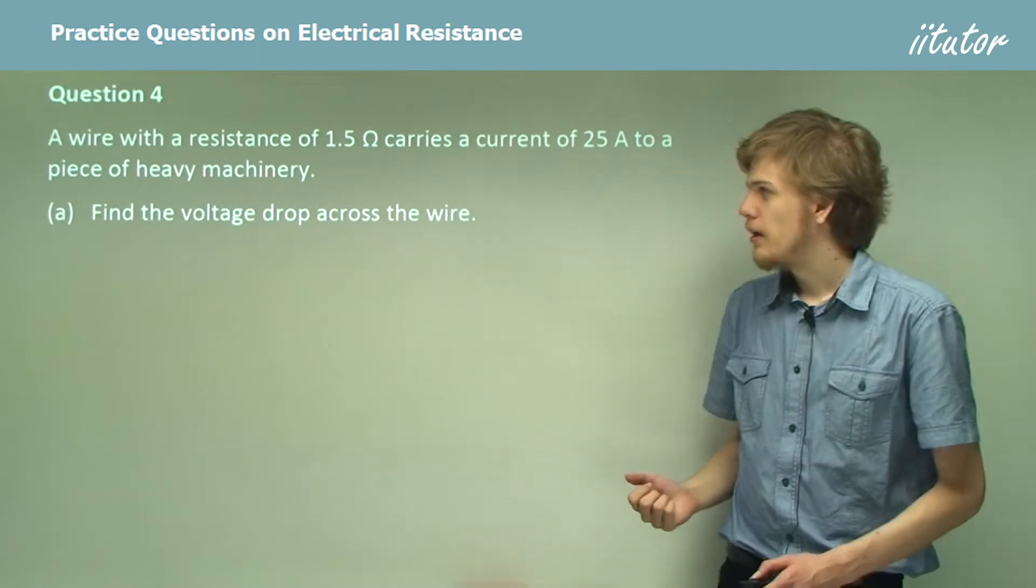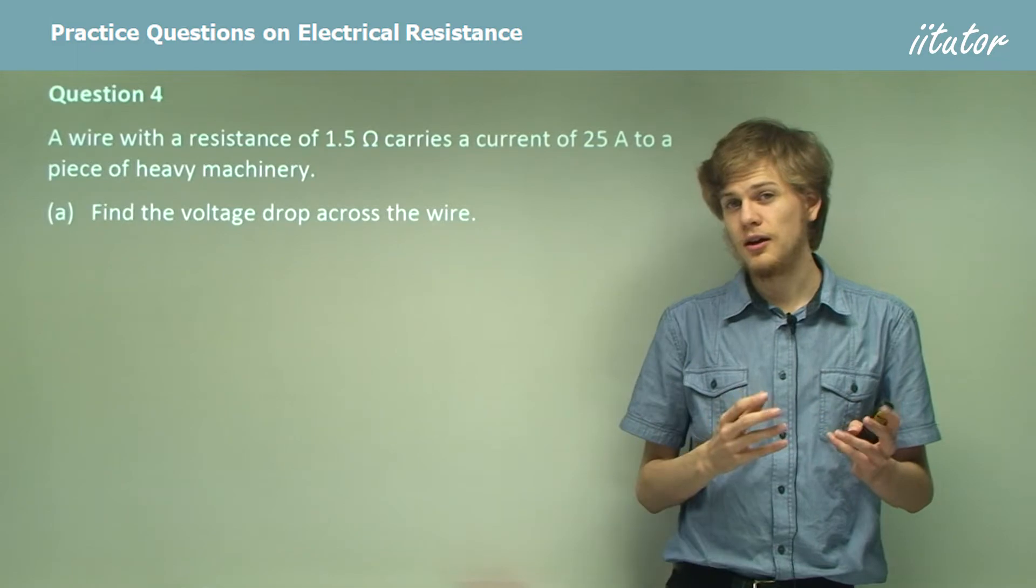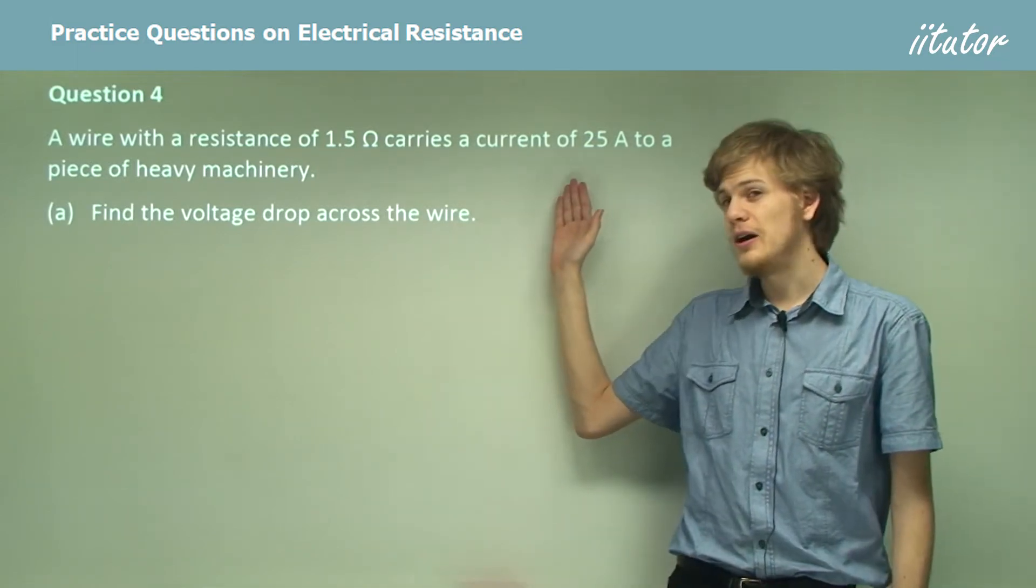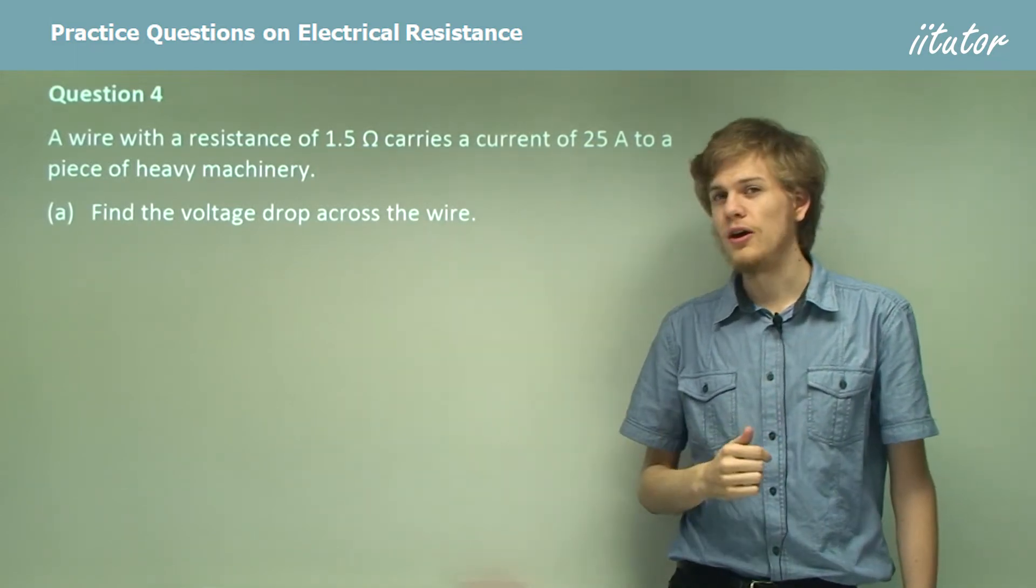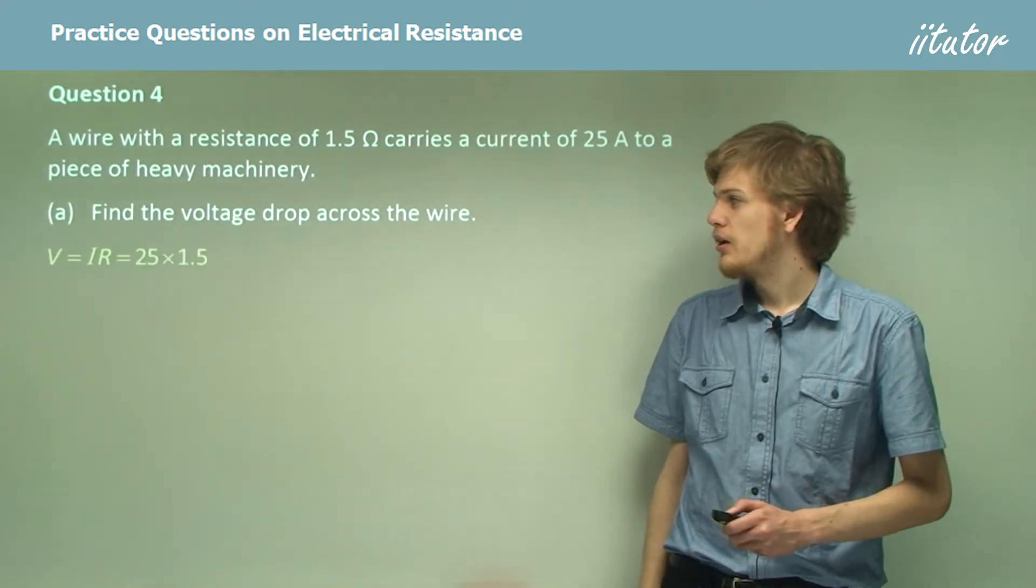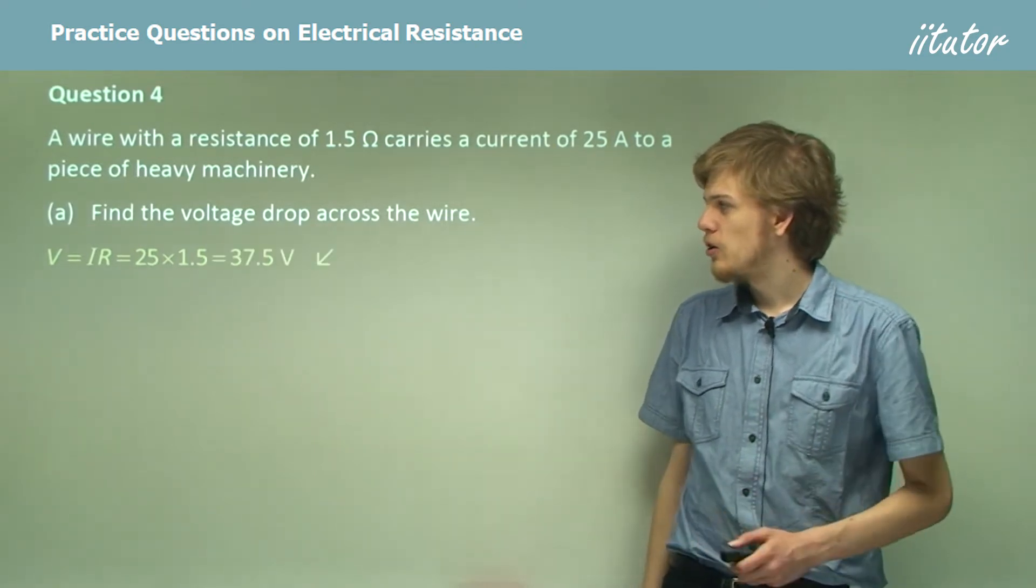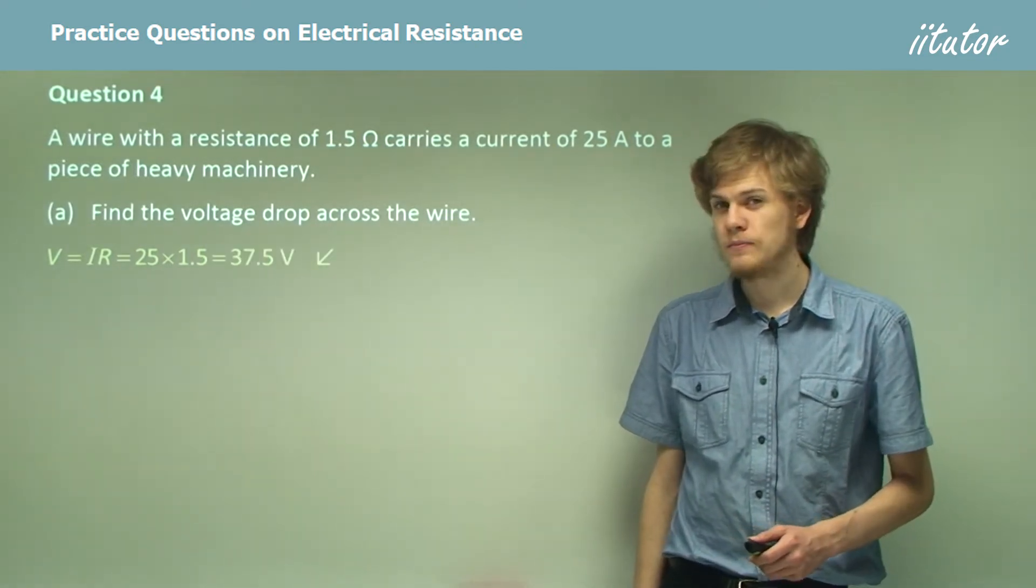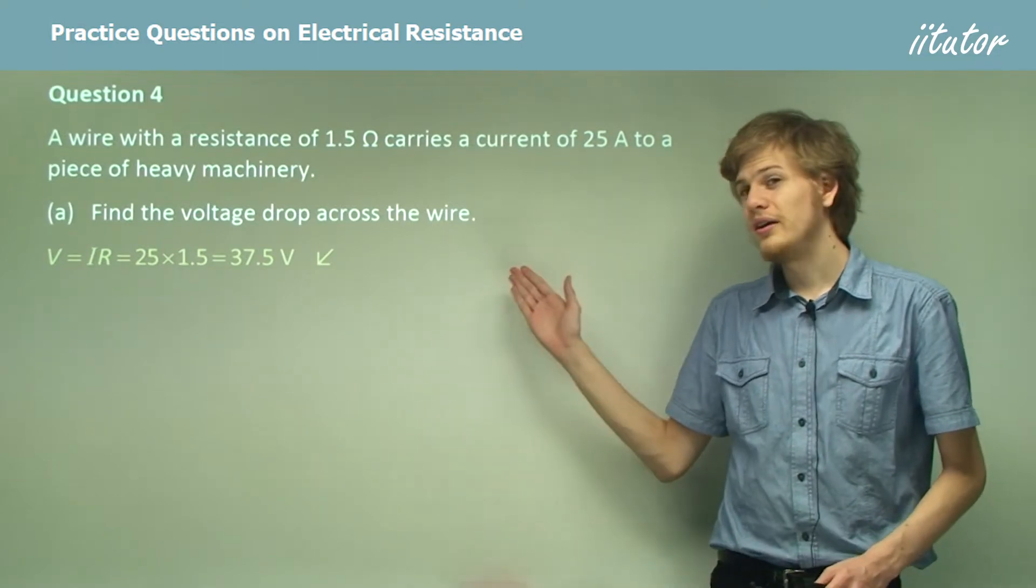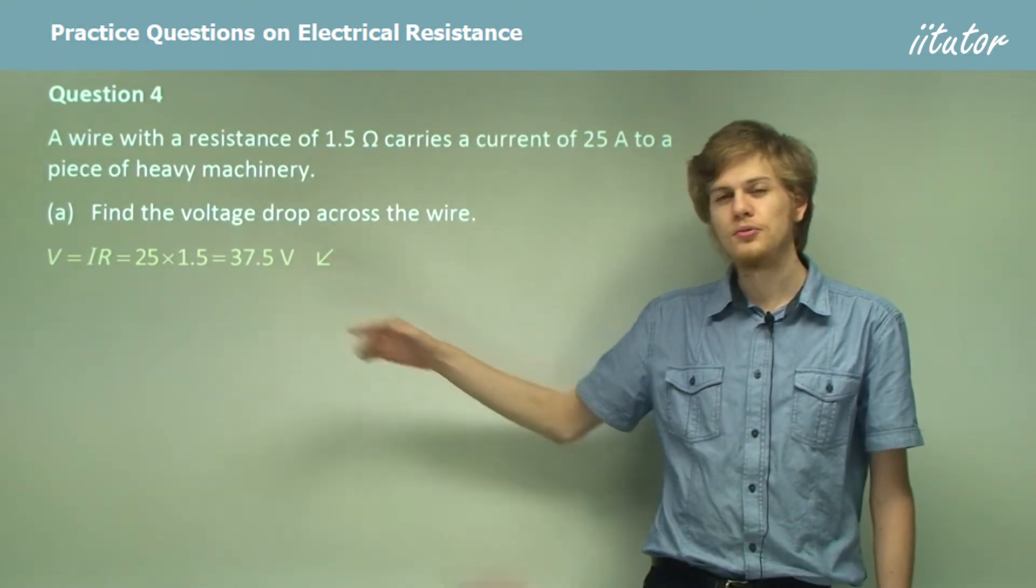All right, let's figure this one out. We're going to be using Ohm's equation, voltage equals I times R. We have a very large I and rather a small R. The voltage drop across the wire is going to be IR, which will be 25 times 1.5. That of course gives us an answer of 37.5 volts. So across the wire alone, we get a drop of 37.5 volts, rather a large amount.